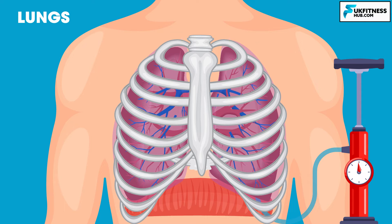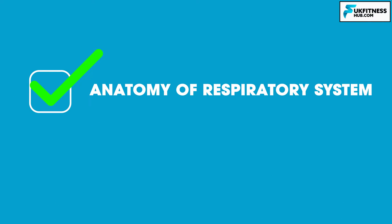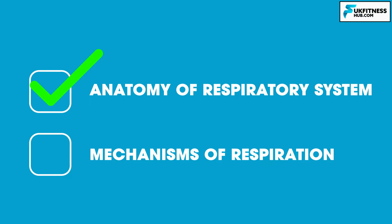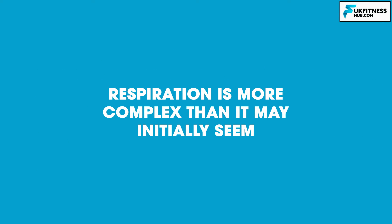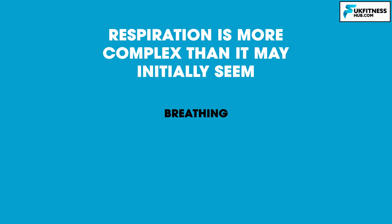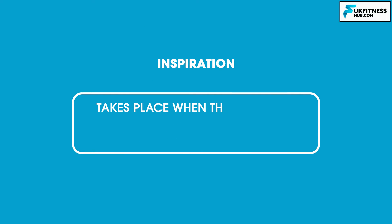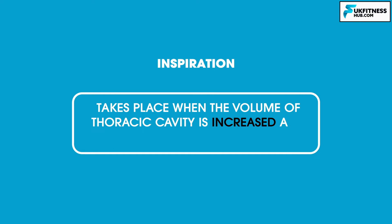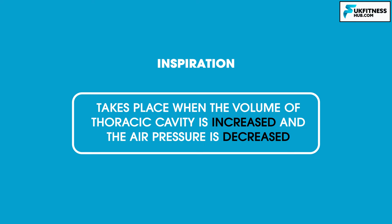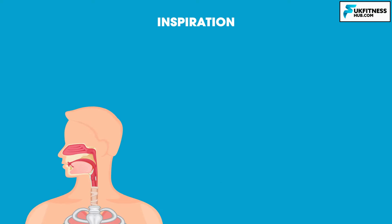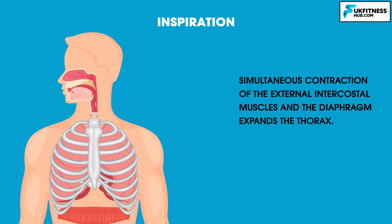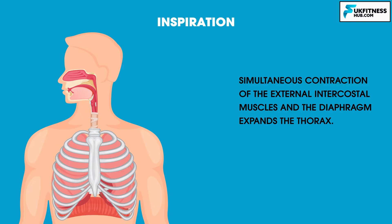The movement of the ribs is one of the mechanisms of respiration or breathing. Now we've covered the basic anatomy, let's look into the mechanisms of respiration. Respiration is more complex than it may initially seem. Breathing consists of two processes: inspiration and expiration. Inspiration takes place when the volume of the thoracic cavity is increased and the air pressure is decreased. Simultaneous contraction of the external intercostal muscles and the diaphragm expands the thorax.